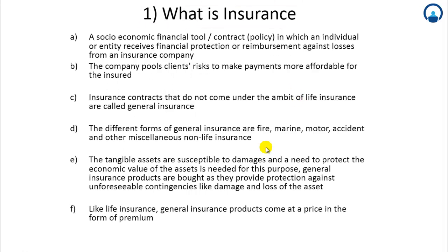What is insurance in general — which also includes life insurance and general insurance? Insurance is a socio-economic financial tool or a contract policy in which an individual, entity, or organization receives financial protection or reimbursement against losses from an insurance company. This product, which is a financial service, is sold by financial service companies such as banks or insurance companies. The insurer company pools clients' risk to make payments more affordable for the insured.